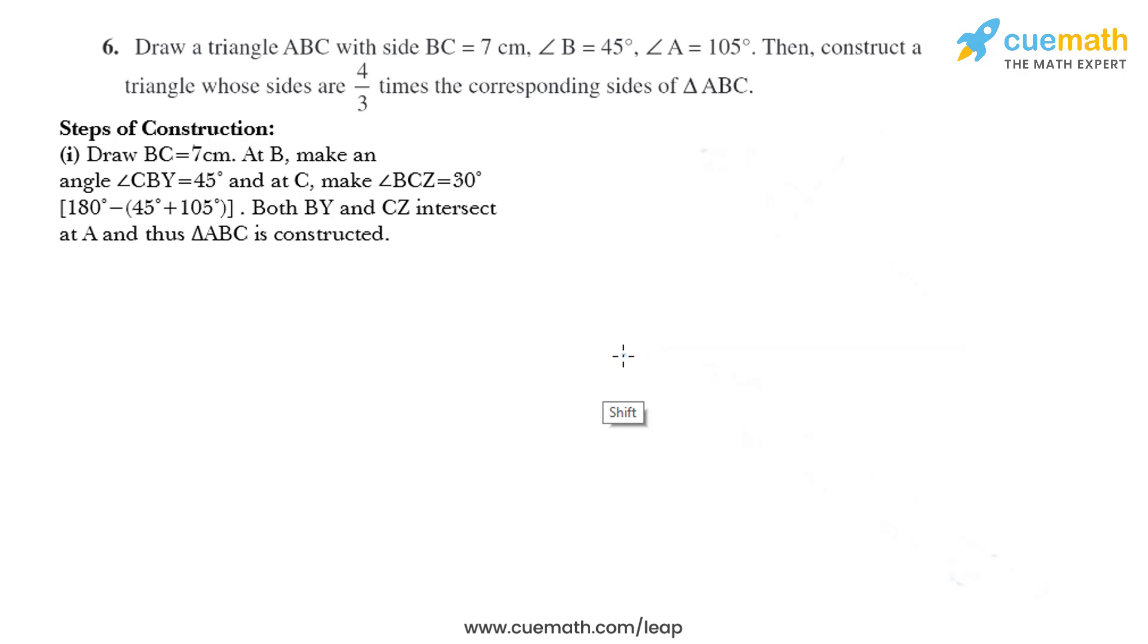So let's draw BC that equals 7 centimeters. This is B and this is C, and it measures 7 centimeters. Now we need to draw angle CBY that measures 45 degrees. So this is CBY and it measures 45 degrees.